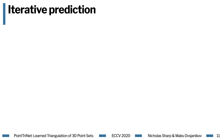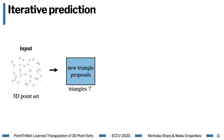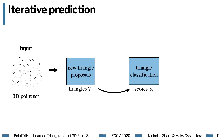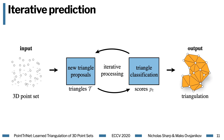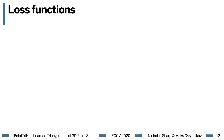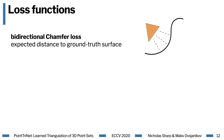Bringing this all together, PointTriNet takes as input a 3D point set, and alternates between proposing new triangle candidates and classifying existing candidates, iteratively generating an output mesh. At training time, one can imagine unrolling this whole procedure, kind of like a recurrent neural network, though we find it sufficient to backpropagate only through the final iteration. To train these networks, we make use of standard geometric loss functions, but since we're working with probabilistic triangles, we really want the expectation of some desirable geometric quantity. A bidirectional chamfer loss penalizes the expected distance between the predicted mesh and some underlying surface.